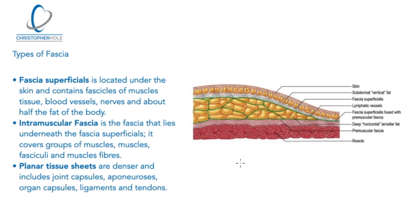There are essentially three layers or types of fascia. Starting from the most superficial, we have fascia superficialis, located under the skin. It contains fascicles of muscle tissue, blood vessels, nerves, and about half the fat of the body. Looking at the diagram, you can see it is where the adipose tissue lies — the layer just below the skin.